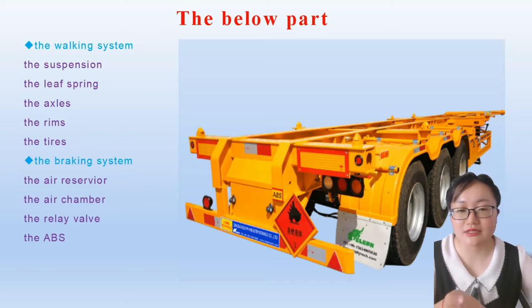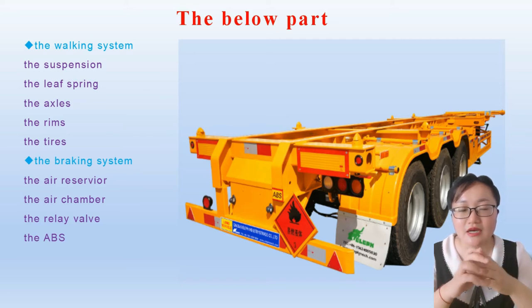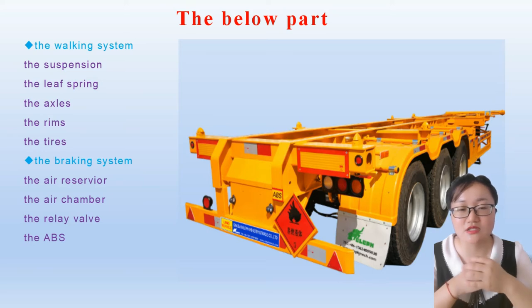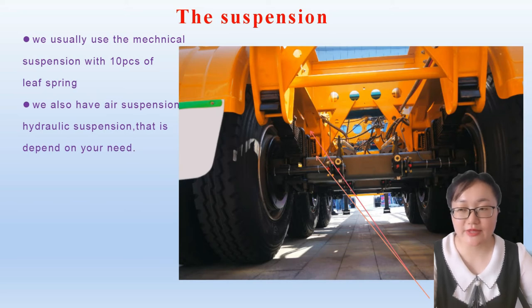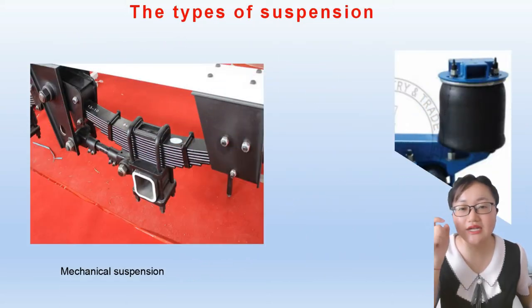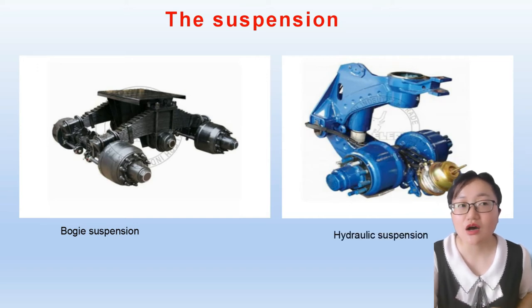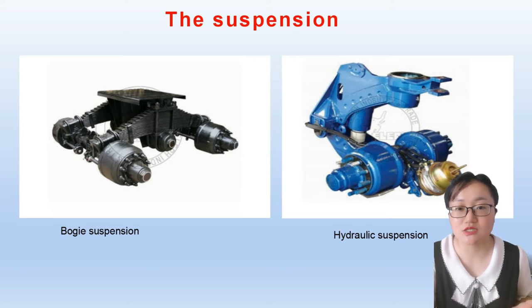That covers the upper part. This is our lower part, which includes the walking system and the braking system. All of our parts are adopted from top manufacturers, so they meet European and United States certification standards to ensure your safety. This is our suspension. We usually use mechanical suspension with 10 pieces of leaf spring. We also offer air suspension, hydraulic suspension, and boggy suspension. If you want to change from mechanical suspension, you can choose the boggy suspension.